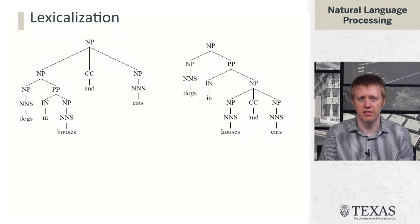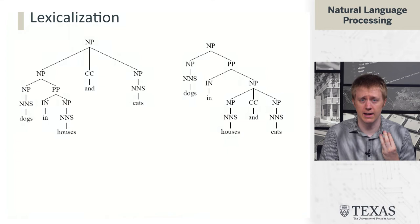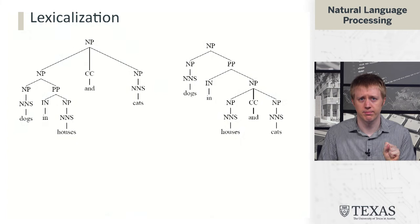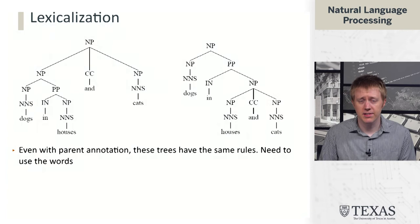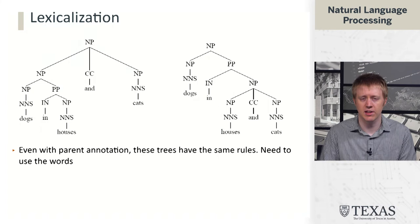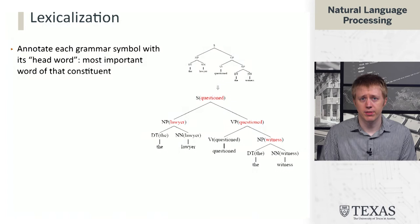The dominant paradigm at the time Klein and Manning were working in 2003 was called lexicalization. Lexicalization captures a different idea that's fairly important but very hard to implement, at least in constituency grammar. Consider two different analyses for 'dogs in houses and cats': on the left, there are dogs in houses and also cats; on the right, there are dogs in both houses and cats, which doesn't make sense. Even with all this parent annotation, both trees still look the same because the rules applied are exactly the same — the difference ends up being the words. To understand that 'dogs and cats' is a more likely conjunction than 'houses and cats,' we really need to be looking at the words.